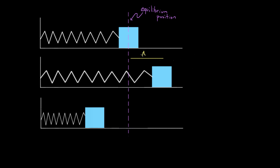We represent the amplitude with a capital A, and it's defined to be the maximum magnitude of displacement for that oscillator. So if this mass only ever makes it this far away, I'm drawing arrows, but this is not a vector. It's the magnitude — the magnitude of the displacement — so it's the magnitude of a vector, meaning it's always positive.